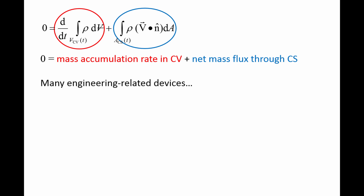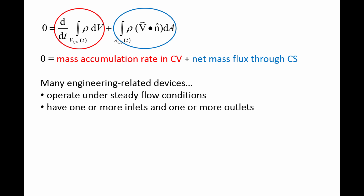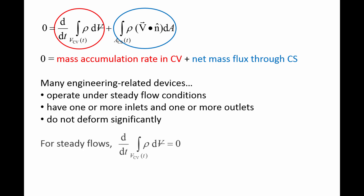By making a few assumptions, this equation can be greatly simplified and still be useful for a wide variety of engineering-related devices. Most devices, such as pumps, turbines, compressors, pipes, and so on, usually operate under steady flow conditions — that is, the flow is constant in time. Most devices will have one or more inlets and outlets and do not deform significantly. For steady flows, the amount of mass in the control volume is constant in time, which means the term with the time derivative is zero, and therefore the second term is also zero. Physically, this means the net mass flux through the control surface is zero: the rate mass enters equals the rate mass leaves.